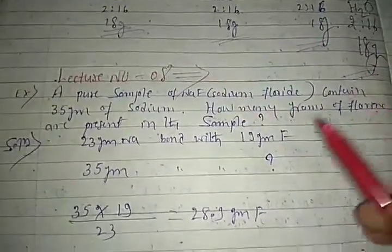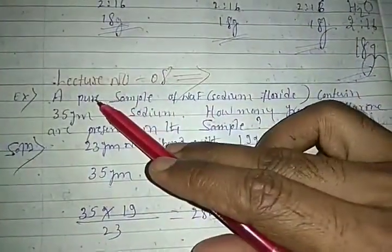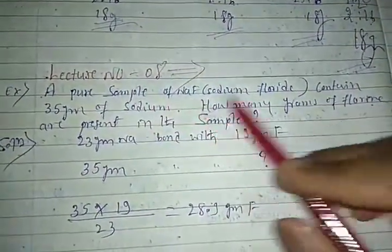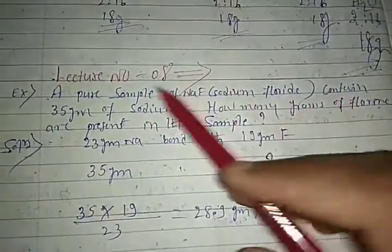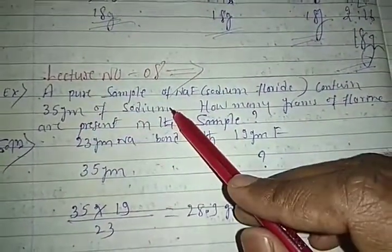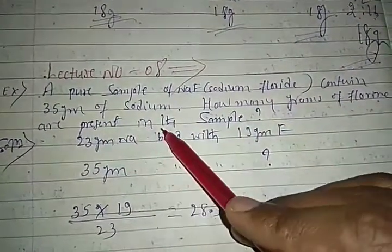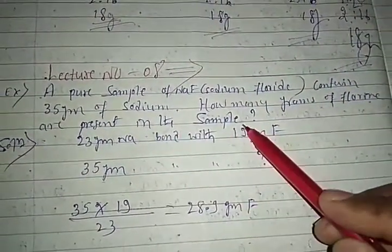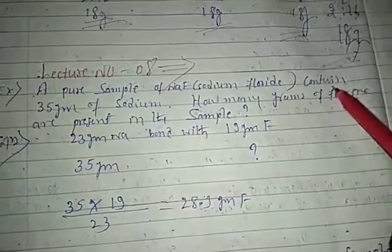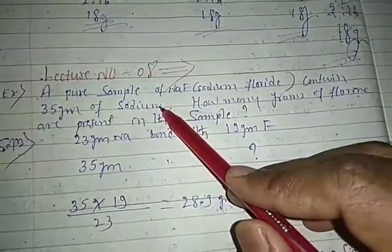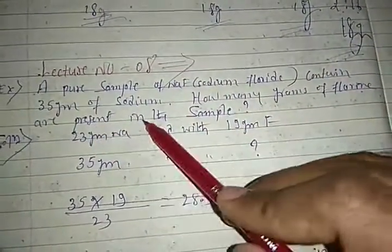Let's see the first numerical example. A pure sample of sodium fluoride (NaF) contains 35 grams of sodium. How many grams of fluorine are present in the sample?